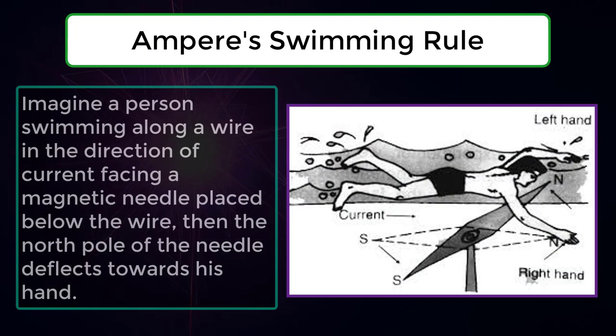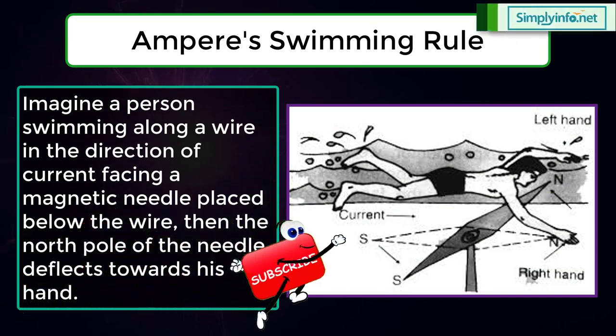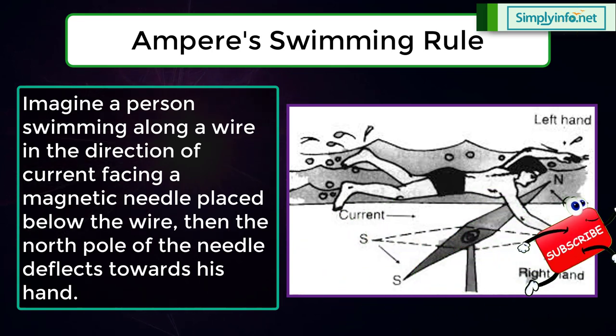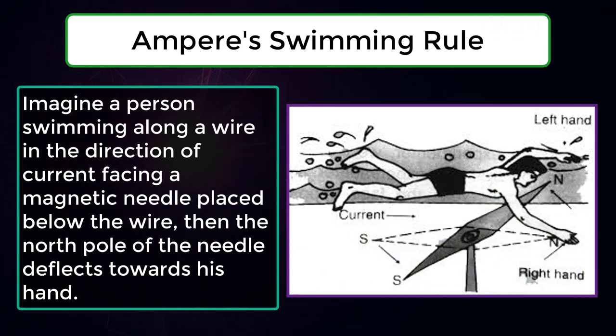Ampere's Swimming Rule: Imagine a person swimming along a wire in the direction of current facing a magnetic needle placed below the wire. Then the north pole of the needle deflects towards his hand.